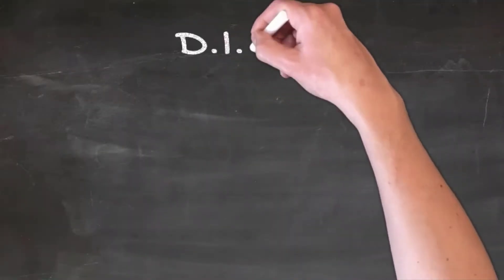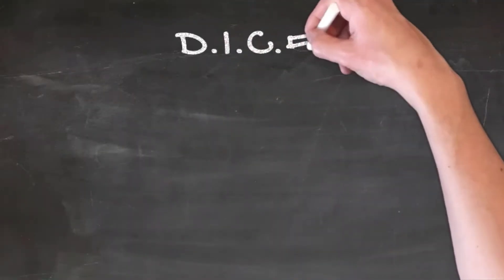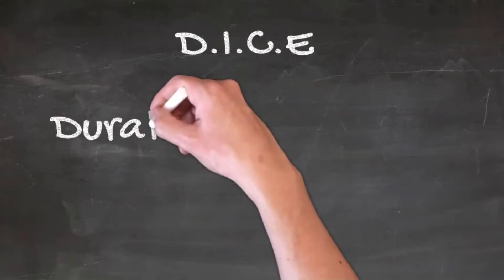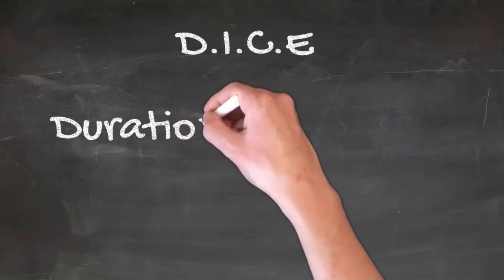DICE is of course an abbreviation. The D stands for duration, which refers to the period of time between project gates or key decision checkpoints.